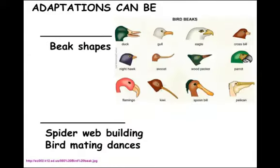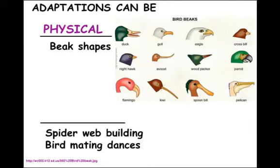Adaptations can be something physical about your body. For example, the shapes of beaks on birds are related to what kind of foods they eat. If you're an eagle that tears meat, you need a different shaped beak than a pelican that scoops fish. Adaptations — color, body parts — these can all be something physical about the organism.